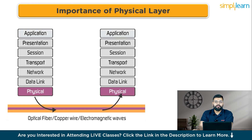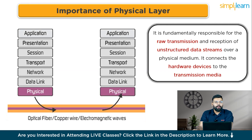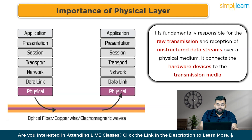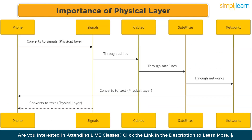Now moving to the physical layer and its importance. The physical layer is the first and lowest layer in the OSI model. It is fundamentally responsible for the raw transmission and reception of unstructured data streams over a physical medium. It connects hardware devices like computers, routers, and switches to the transmission media such as cables or air in the case of wireless. Imagine you are sending a text message — when you hit send, your phone converts the message into electrical signals that travel through cables, satellites, and wireless networks to reach your friend's phone, where it is converted back into readable data. This seamless process is thanks to the physical layer.